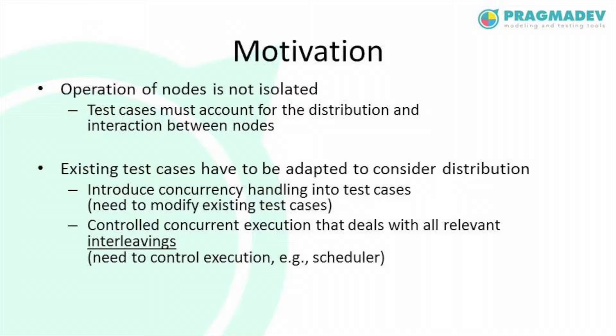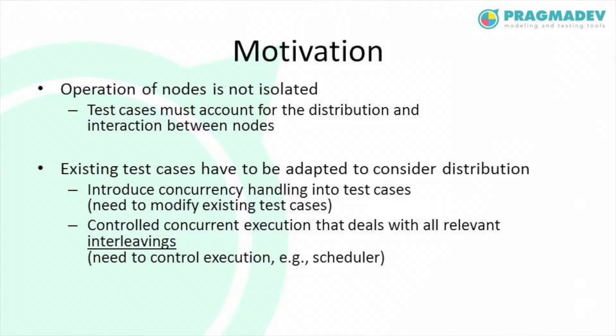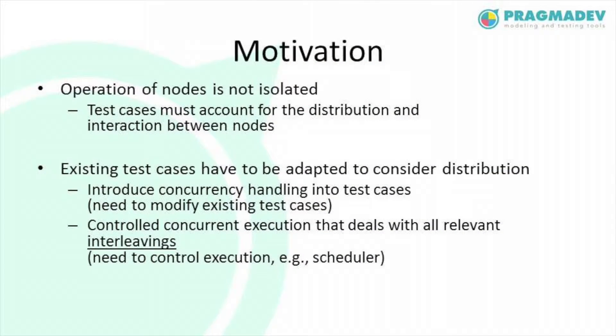Test cases must account for the distribution and interaction between those nodes. If we consider test cases that test the behavior of a certain node and want to use them in such scenarios, there are usually two possibilities. The first is to modify the test cases to account for the distribution. The other option is to not touch the test cases but provide a mechanism that can automate or simulate the execution in a distributed environment, controlled for example by means of a scheduler.